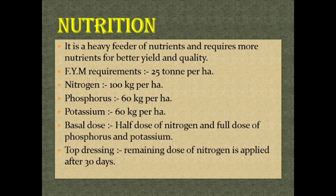Nutrition. Brinjal is a heavy feeder of nutrients and requires more nutrients for better yield and quality. FYM requirement: 25 tonnes per hectare. Nitrogen: 100 kg per hectare. Phosphorus: 60 kg per hectare. Potassium: 60 kg per hectare. Basal dose: half dose of nitrogen and full dose of phosphorus and potassium. Top dressing: remaining dose of nitrogen is applied after 30 days.